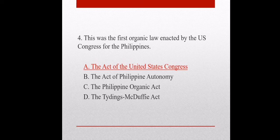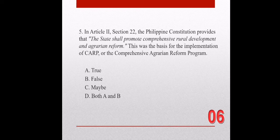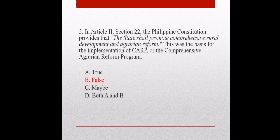Question number five. In Article 2, Section 22, the Philippine Constitution provides that the state shall promote comprehensive rural development and agrarian reform. This was the basis for the implementation of CARP or the Comprehensive Agrarian Reform Program. A. True. B. False. C. Maybe. D. Both A and B. The correct answer is letter B, False.